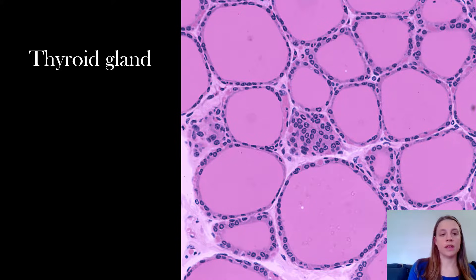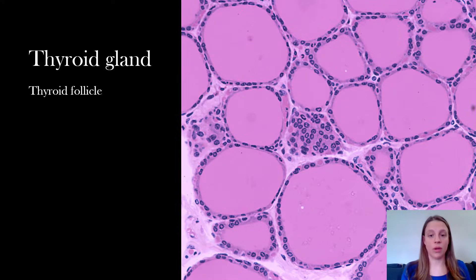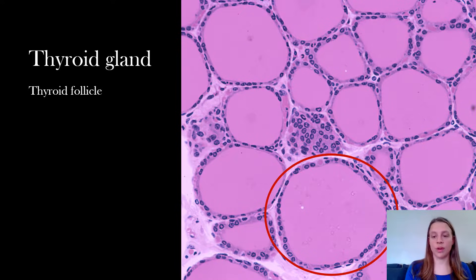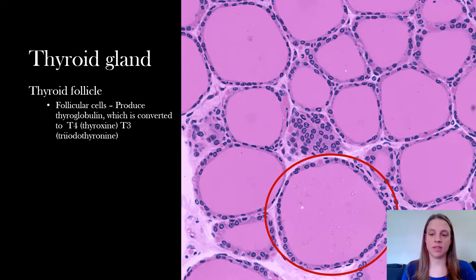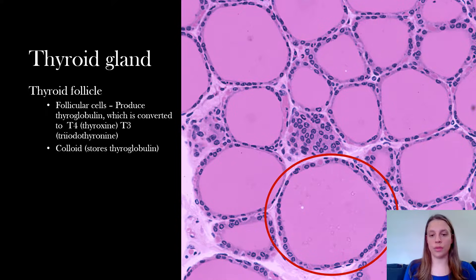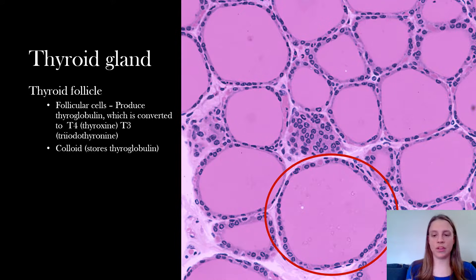The thyroid gland is mostly composed of thyroid follicles — every one of these circular structures is a thyroid follicle. Thyroid follicles are made up of two things: the follicular cells, which is that chain of cells surrounding the outside. These produce thyroglobulin, which is later converted to thyroxine and triiodothyronine. There is also colloid, which stores the thyroglobulin until it is ready to be converted to T4 and T3.